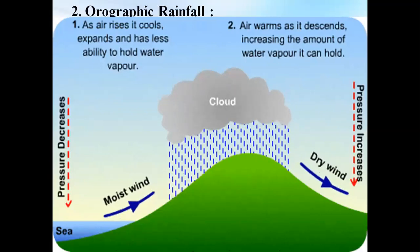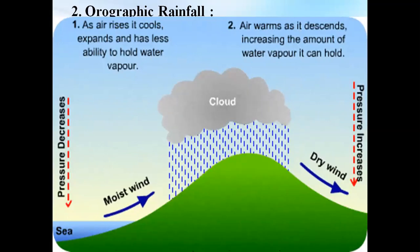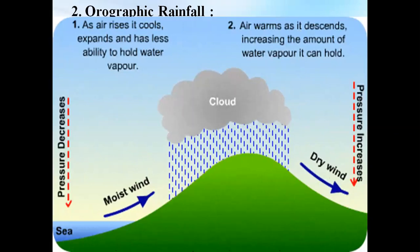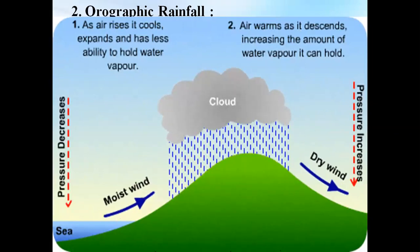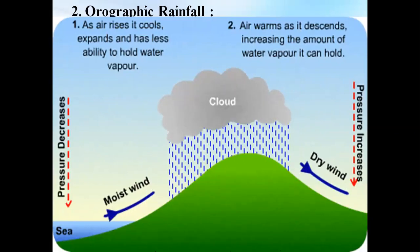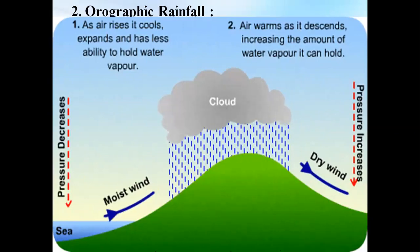The next type is orographic rainfall, also known as relief rainfall. When moist air is compelled to ascend at a higher altitude, there is a subsequent decrease in atmospheric pressure. Finally, when the dew point is reached, it leads to heavy rainfall. The leeward side, also known as the rain shadow region, receives very little rainfall, because as the wind descends, it gets compressed and warms, and thus no condensation takes place.